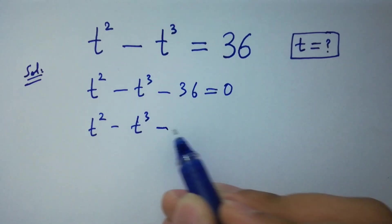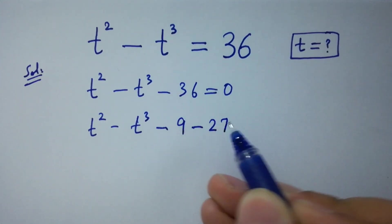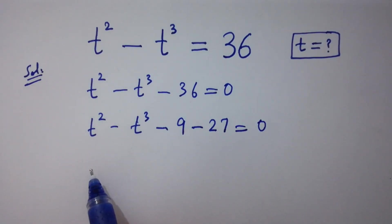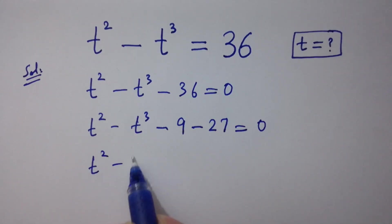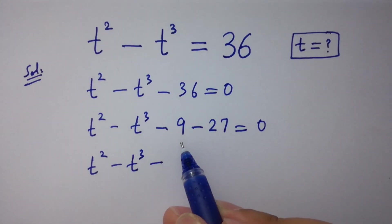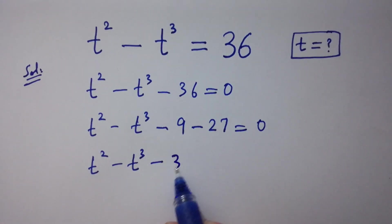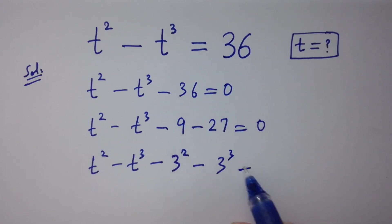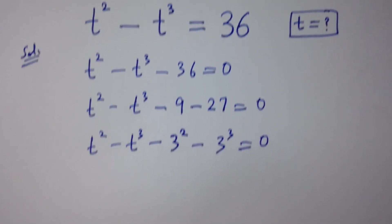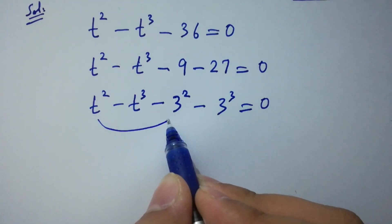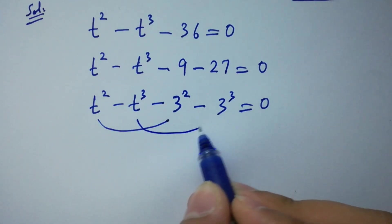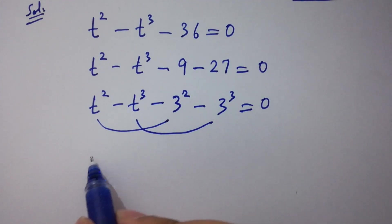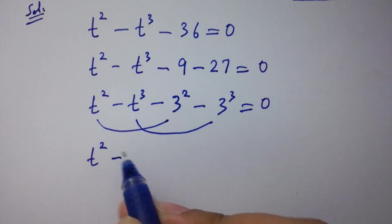t-squared minus t-cubed minus 36 is the same as minus 9 minus 27 equal to 0, by corresponding. Here 9 is the same as 3-squared and 27 is the same as 3-cubed. As you can see, t-squared matches 3-squared, and t-cubed matches 3-cubed.